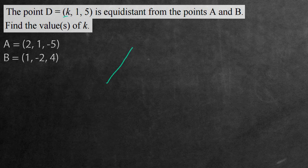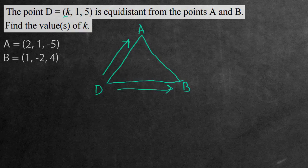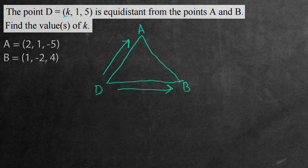So let's go ahead and draw out a triangle to represent what's going on here. The point D is equidistant to two other points, points A and point B. It's stating that this length right here and this length right here are the same. And it's saying that because it's going to help us define an equation that's going to allow us to find all the values of K.